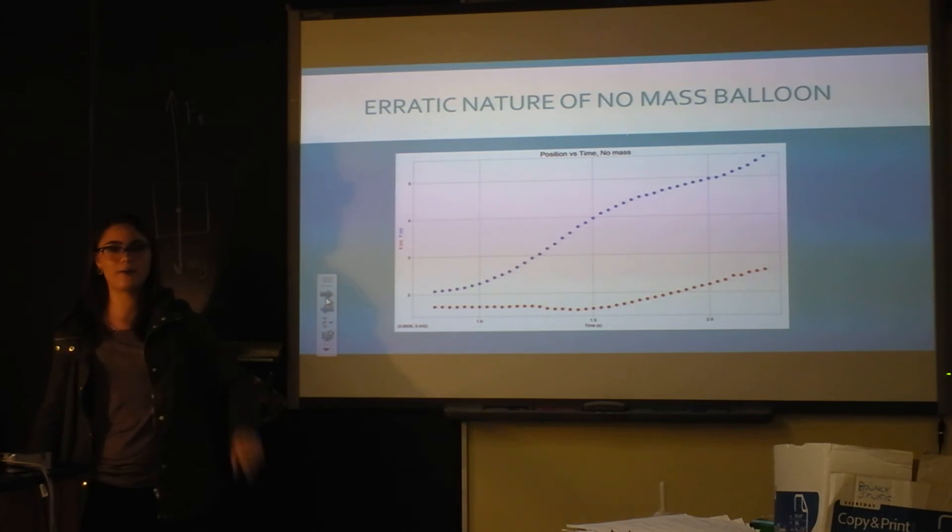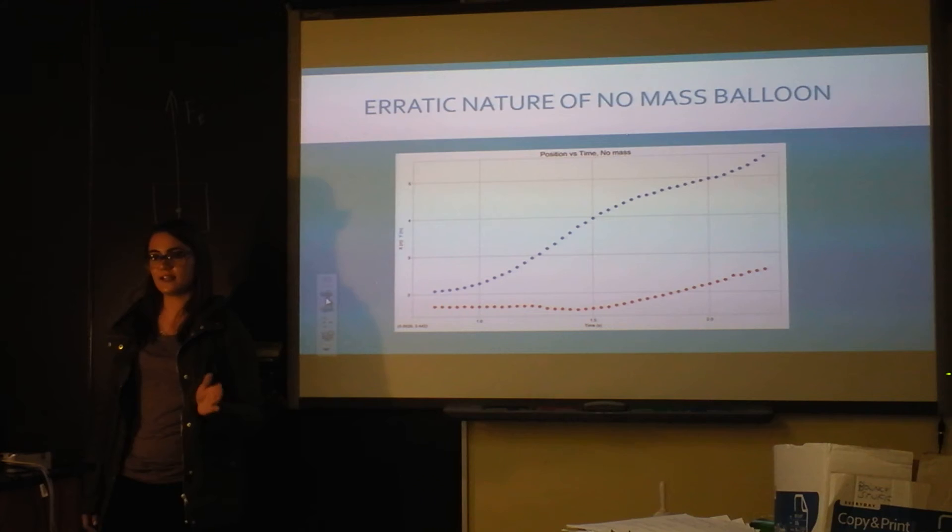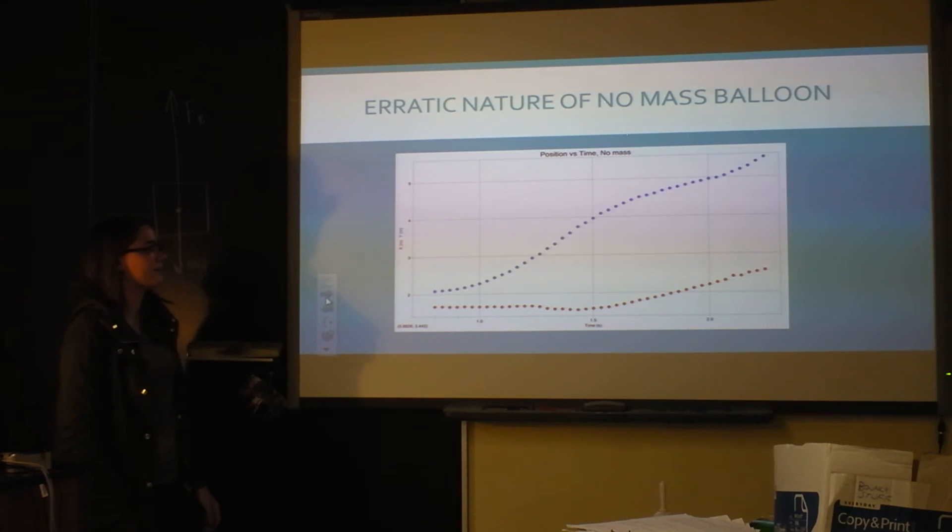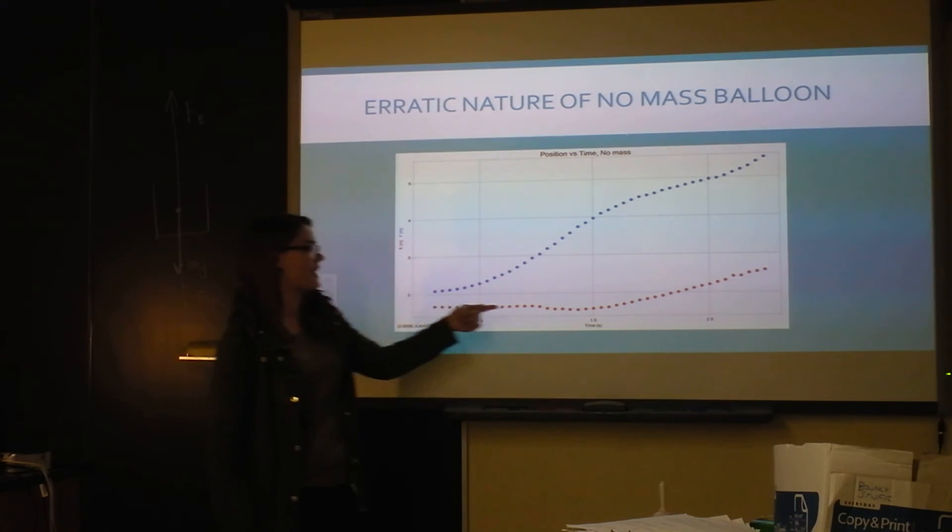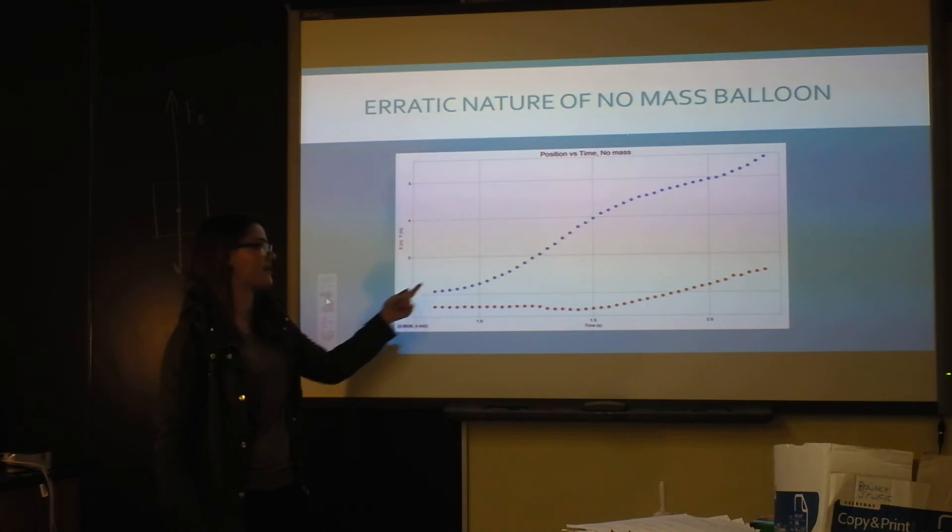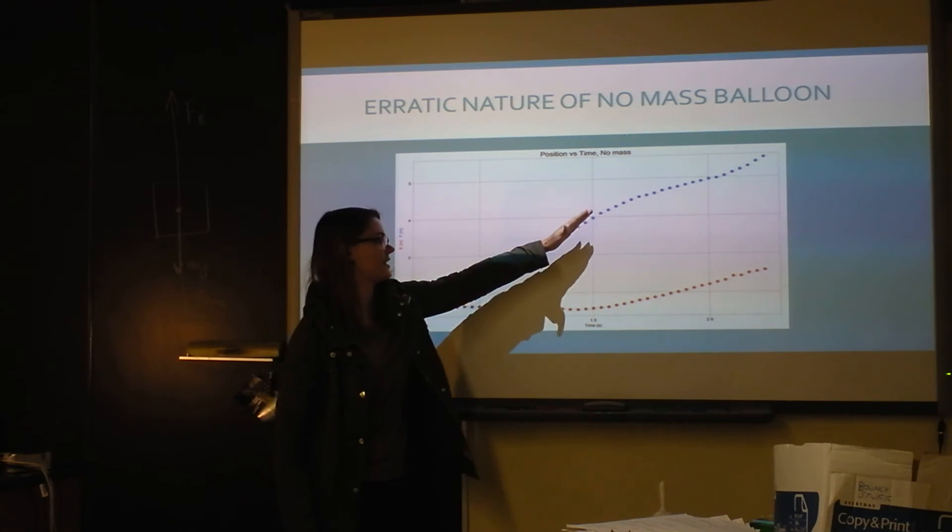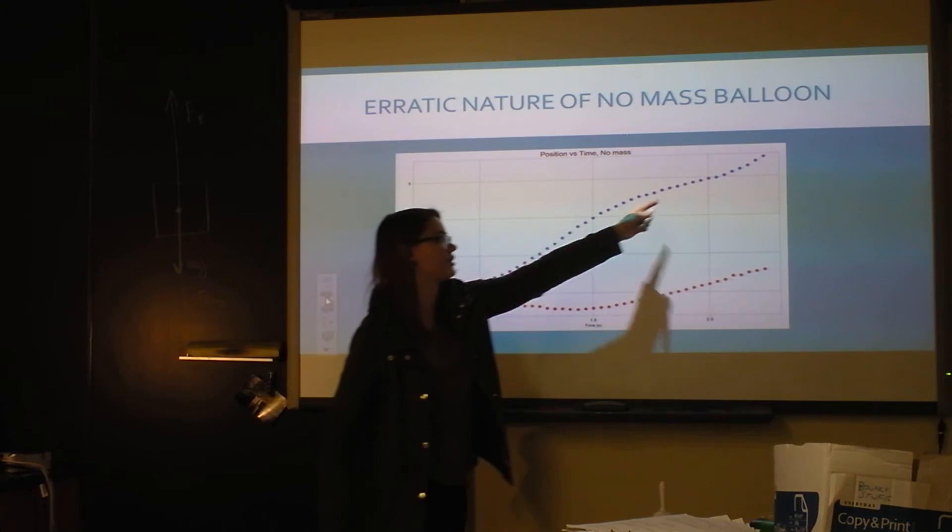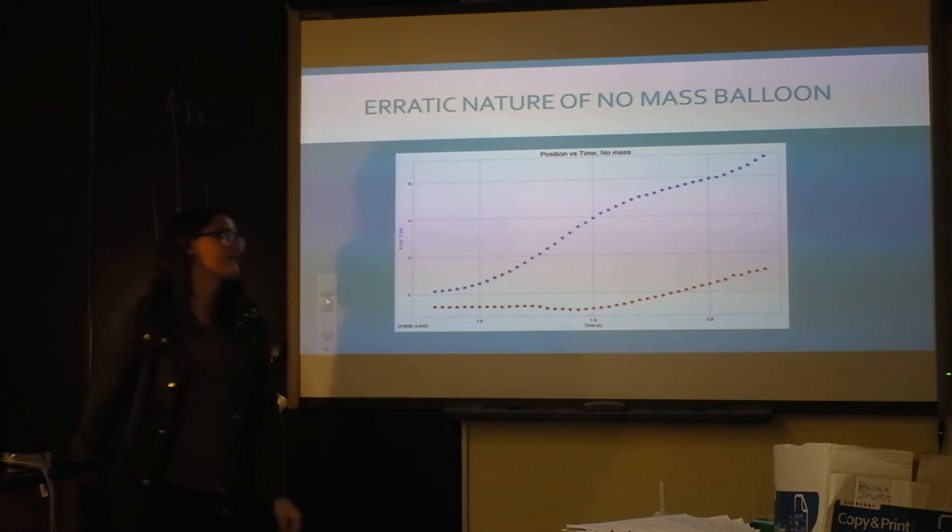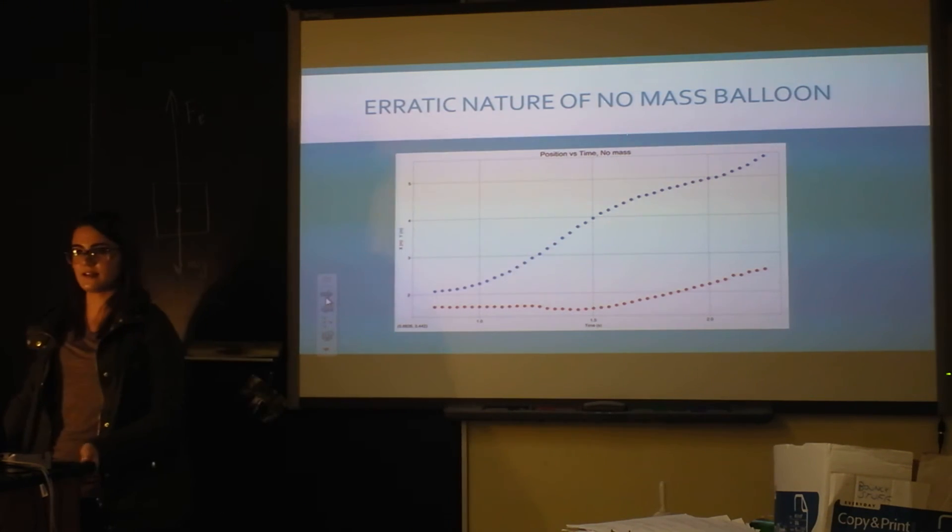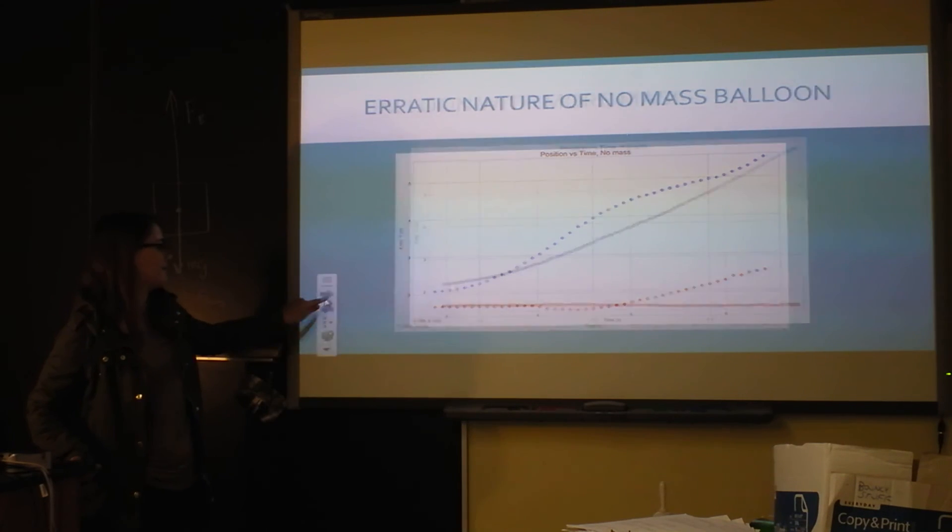This is the first balloon that no mass was added. Basically, what it looked like in the video was the balloon would go up and then dramatically curve to the side. This shows how much it moved in the x direction and this is how much it moved in the y direction. Right here is where there was a terminal velocity and that's where it started going crazy. The path was really inconsistent and if you were traveling in that balloon, you would probably die.